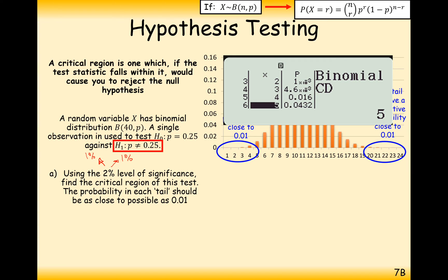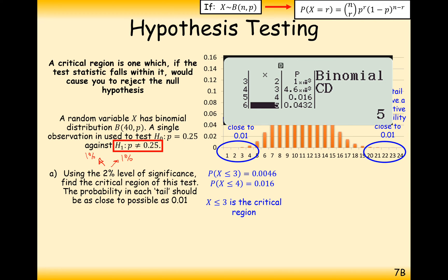First, pull out the binomial CD mode on the calculator, use the list function with N equals 40 and P equals 0.25, and put in a few suggested values of X to get a cumulative probability as close to 0.01 as possible. The two closest are the 3 and 4 values. The probability of three or fewer successes is about 0.46%, and the probability of four or fewer successes is about 1.6%. The closest here is the critical region X less than or equal to 3 — so if we get three successes out of 40 trials with probability 0.25, we'd be suspicious that the probability might be lower than 0.25.